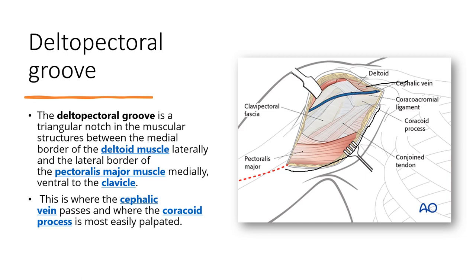The major anatomy of this groove is that the cephalic vein passes through it. This is where the cephalic vein passes and where the coracoid process of the scapula is most easily palpated.